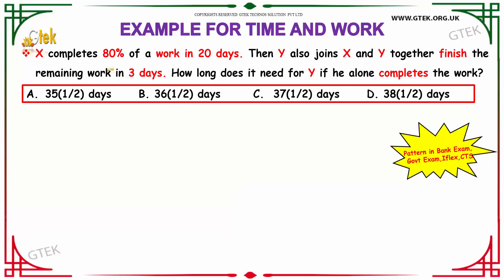It is given that X completes 80% of a work in 20 days. Then, Y also joins X and Y together finish the remaining work in 3 days. So, how long does it need for Y if he alone completes the work?